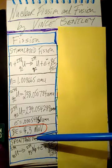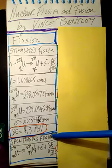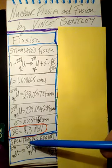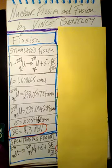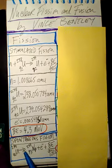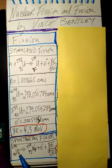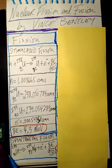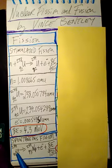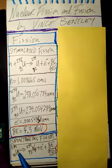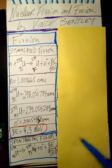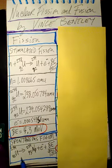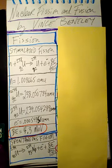Next, we'll do something called spontaneous fission. Spontaneous fission is when you just have an atom and it doesn't need a neutron to come into it — it will just immediately break up into pieces because it's radioactive.